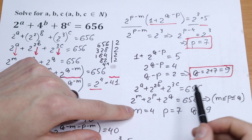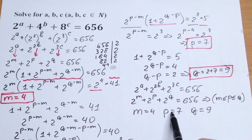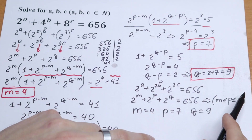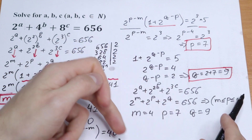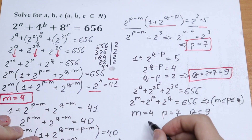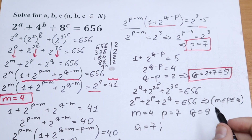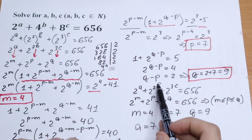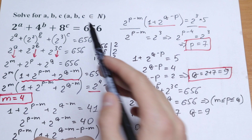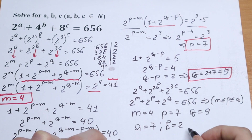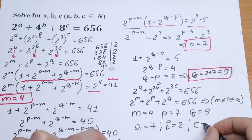We need integer answers. The one and only valid combination: a must equal 7 (since 2b=7 gives b=3.5, not an integer, and 3c=7 gives c=7/3, not an integer). Then 2b equals 4, so b equals 2. And 3c equals 9, so c equals 3.